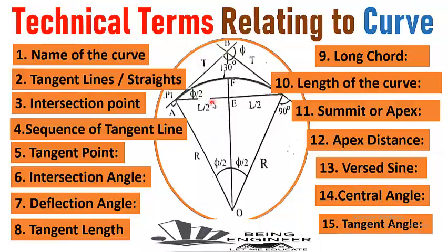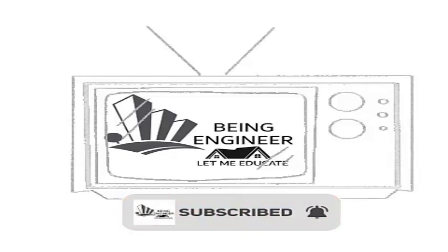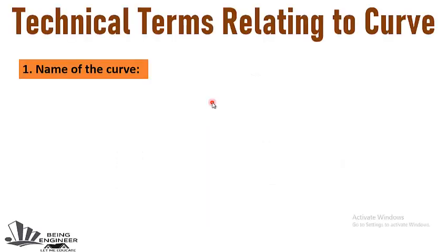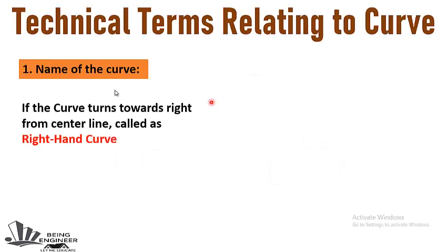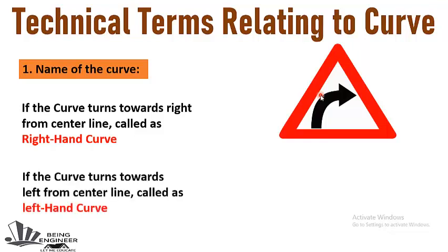The first term used in a curve is the name of the curve. If the curve turns towards the right from the center line, it is called a right hand curve. This signal is mostly installed on road sides to provide information about the curve coming ahead. If the curve turns towards the left from the center line, it is called a left hand curve.